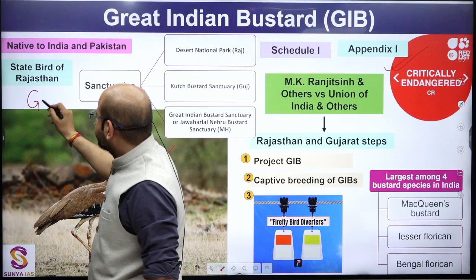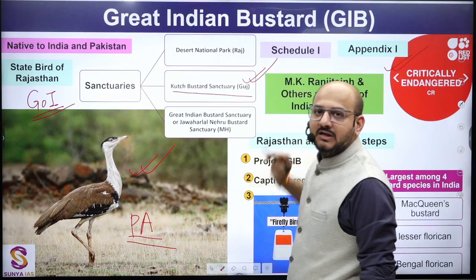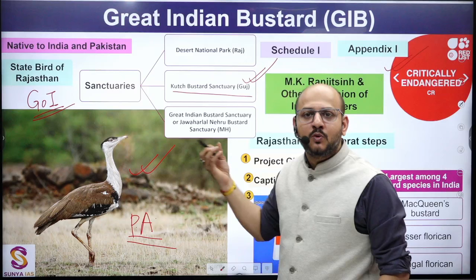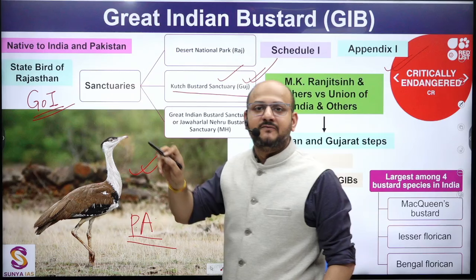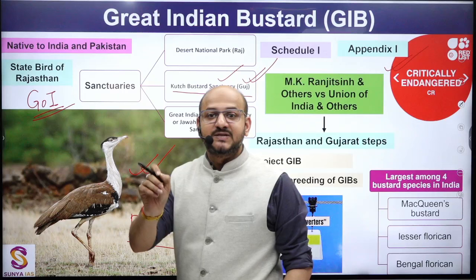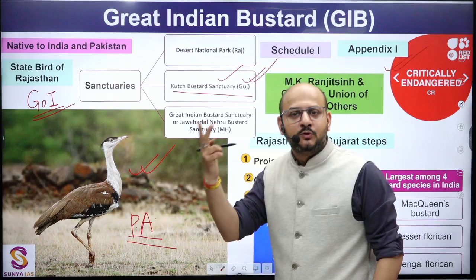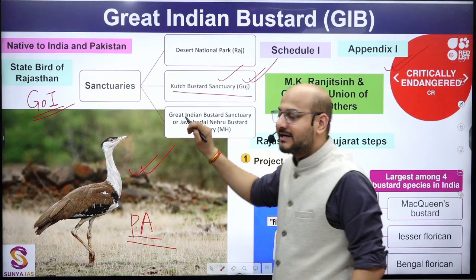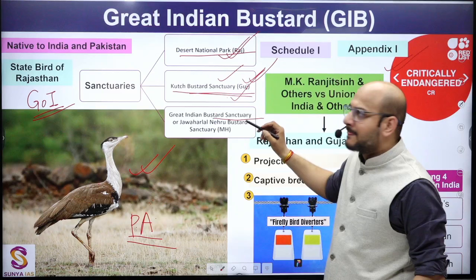Recently it is in the news because the Ministry of Environment has submitted that in the Kutch Bustard Sanctuary there are no Great Indian Bustards. The Great Indian Bustard is also locally known as Godavan. So if a statement comes in the examination that as per the recent report there is no Great Indian Bustard found in the Kutch Bustard Sanctuary, remember that it is found in the Desert National Park. Kutch Bustard Sanctuary and Desert National Park are both very important.